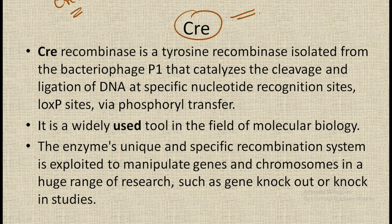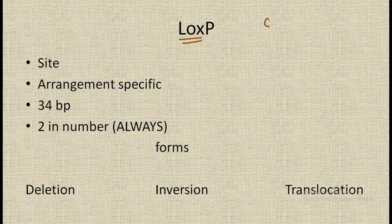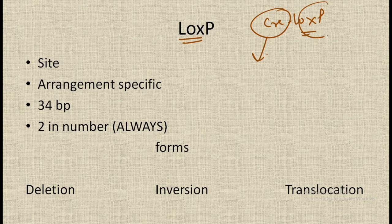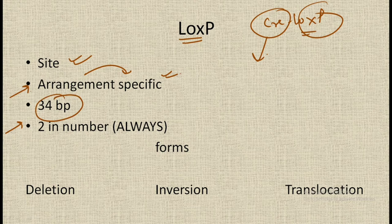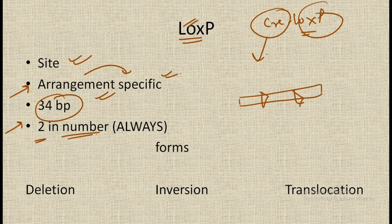The second component in the Cre-loxP system is loxP. Cre is a recombinase and loxP is a site, and their arrangement is mostly specific in nature. LoxP sites are about 34 base pairs in size and are always two in number — whenever we analyze a gene, two loxP sites will be present. There occur three kinds of variations: deletion, inversion, and translocation.